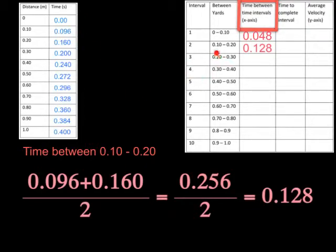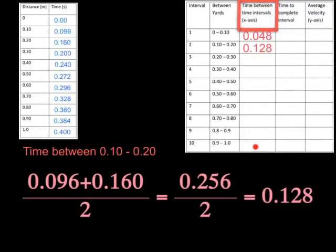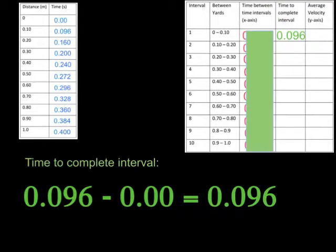For the second midpoint, from 0.1 to 0.2 meters, I take 0.096 plus 0.160, which gives 0.256, then divide by two for a result of 0.128. That number goes there. You are responsible for completing the rest of these on your own using your own values. The next column is the time to complete the interval — the time to go from 0 to 0.1, from 0.1 to 0.2, and so on.